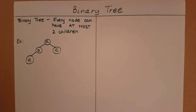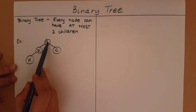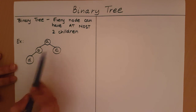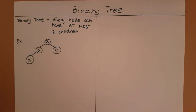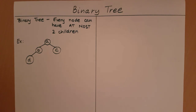This is an example of a binary tree. Every node has at most two children: A has two children, B has one child, and C and D have zero children. The number of children of any node cannot go beyond two, so this is a valid binary tree.